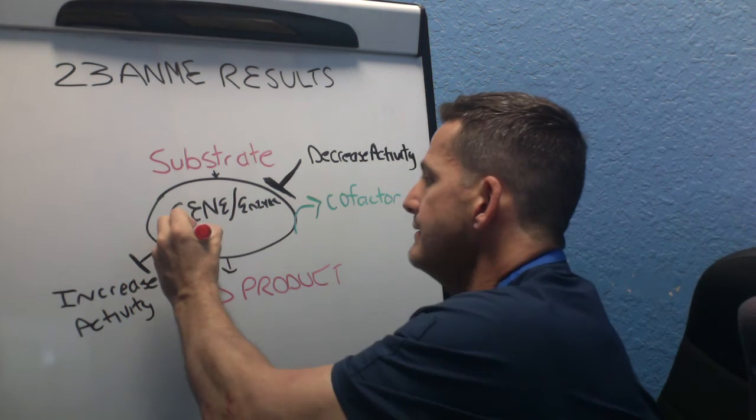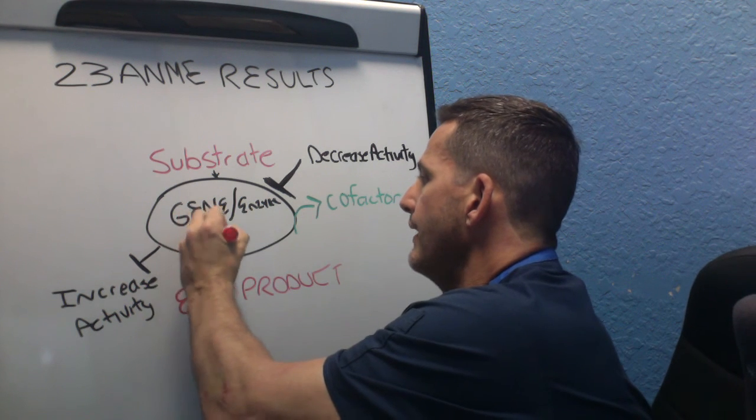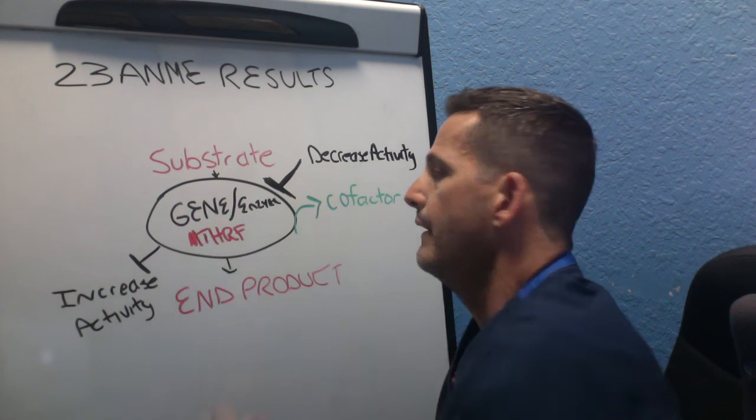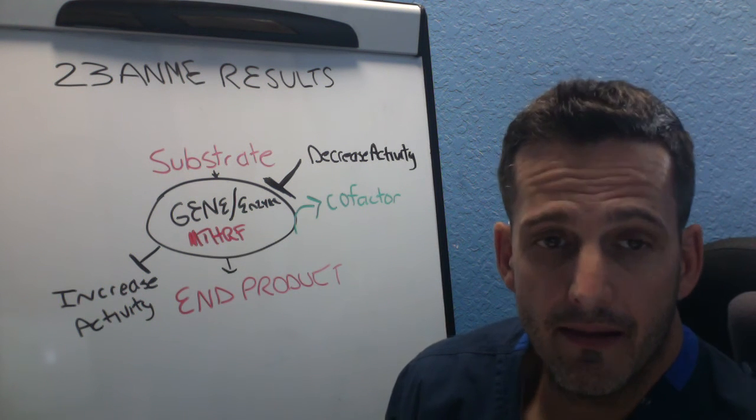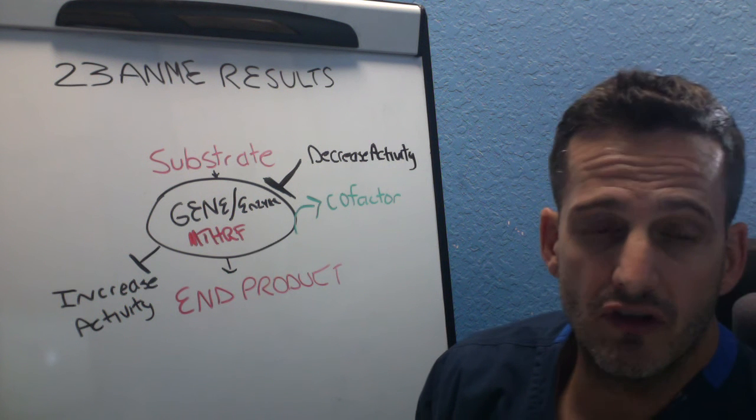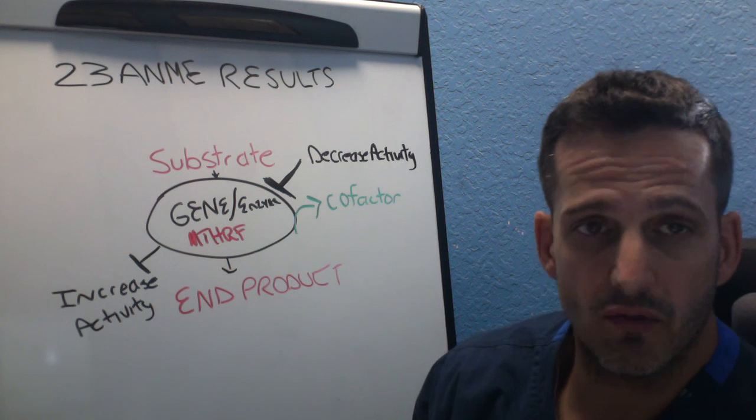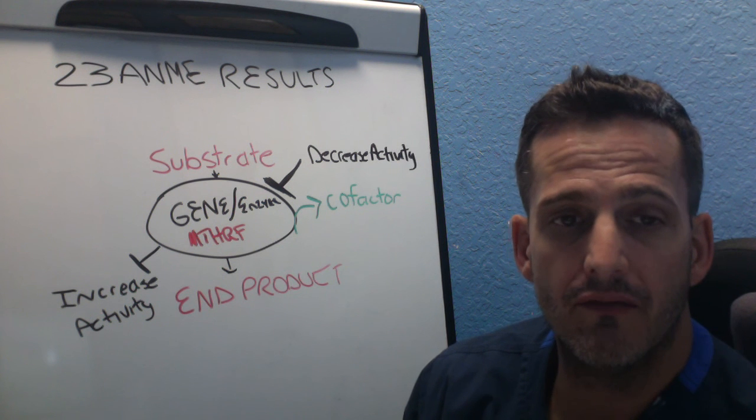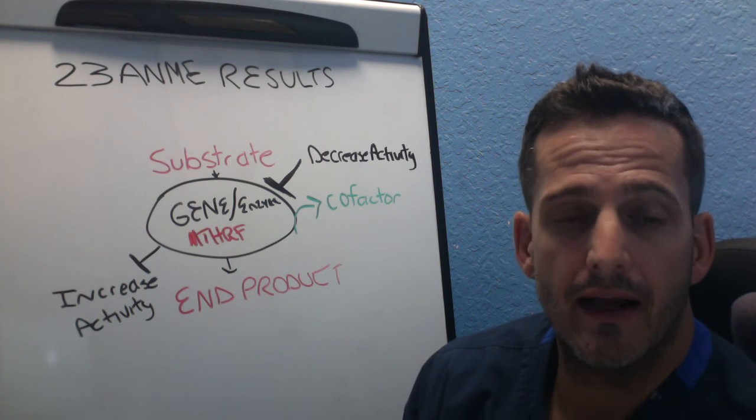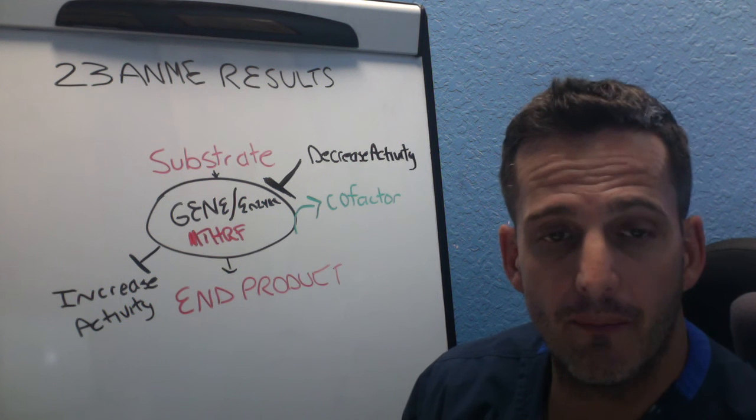So let's give this an example. Let's say we put MTHFR in here. MTHFR is a gene, is an enzyme, and the enzyme is made by a gene. What happens is these 23andMe results tell us about the functioning of these genes and how it codes for enzymes, how it makes enzymes.